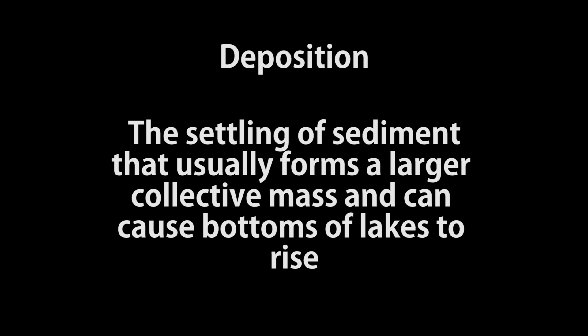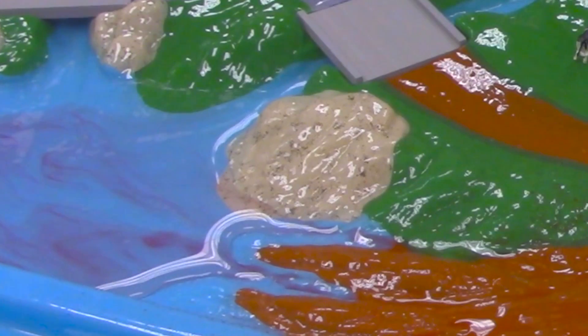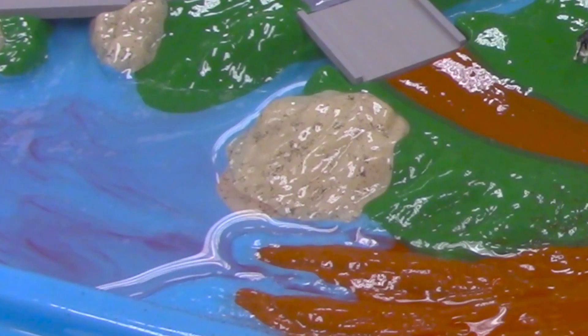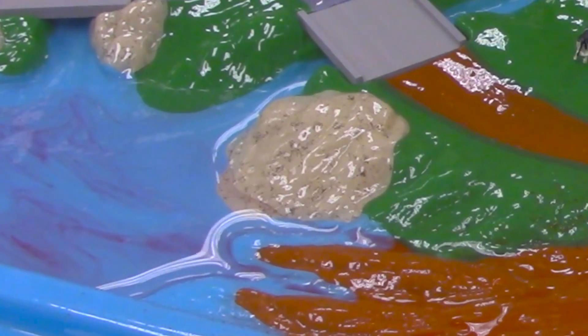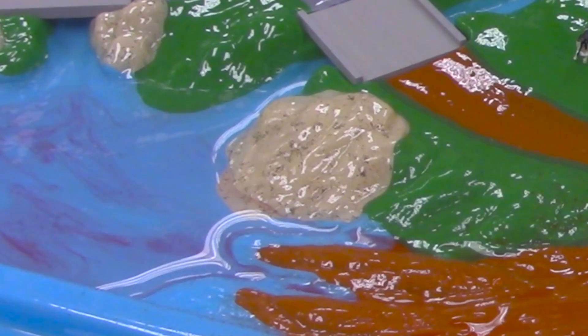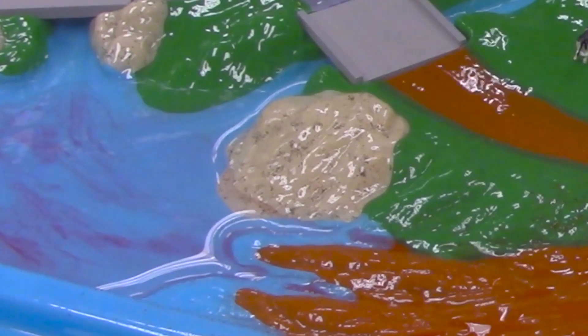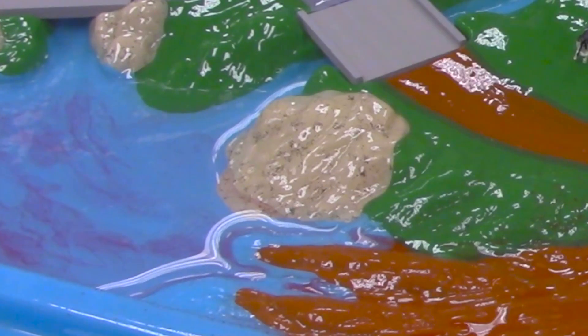The movement of soil and its deposition as sediment is one of the largest forms of pollution from agriculture. As the soil settles, it has the potential to cover lake, river, and stream bottoms, causing the plant and animal life to die. The fertilizers and pesticides that run off the land into the water are also pollutants that can cause excessive plant growth and potentially plant or animal kills.